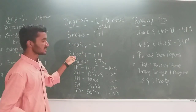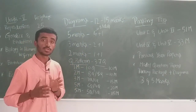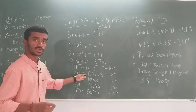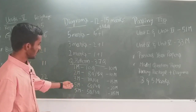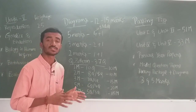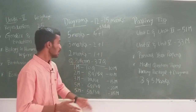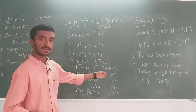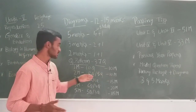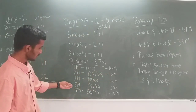The question paper pattern: 1-mark — 10 questions; 2-mark — 8 questions; 5-mark — 6 questions. Total: 1-mark all ten = 10 marks, two-mark five questions = 10 marks, and 5-mark questions.